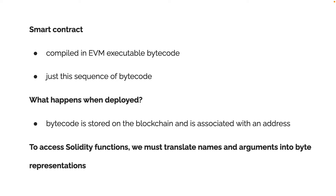We compile a smart contract into bytecode and the smart contract is now just bytecode. When the smart contract is deployed, the bytecode is stored on the blockchain and the contract is associated with an address. To access functions and variables from the Solidity contract, we must translate names and arguments into byte representations.